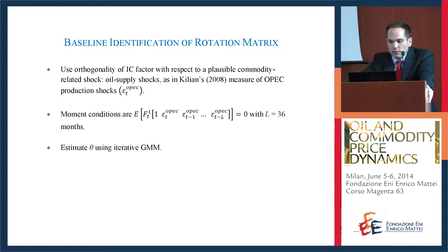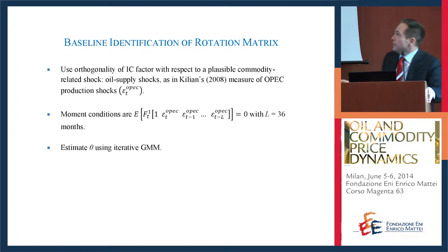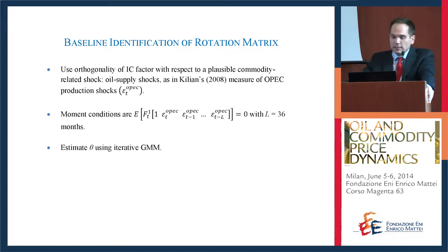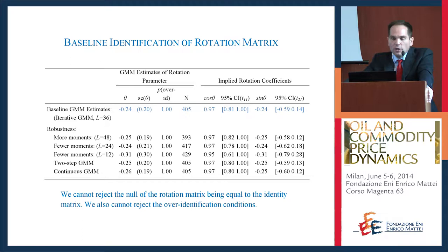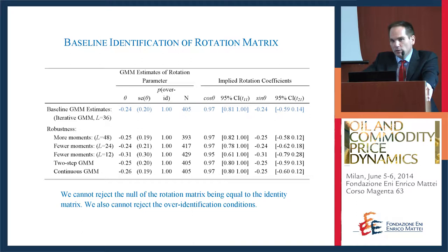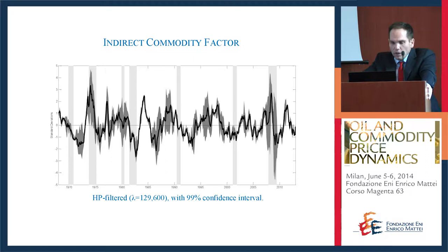To test the moment condition, we need plausible commodity-related shocks. We rely on Lutz's work on oil supply shocks — specifically OPEC production shocks — and test the moment condition using 36 lags plus the contemporaneous shock and a constant, estimating theta using iterative GMM. The test is how much we need to rotate the factors to be consistent with an implication of the theory. We find we don't need to rotate much — we cannot reject that the rotation matrix equals the identity matrix. In other words, the first factor looks like the indirect commodity factor.